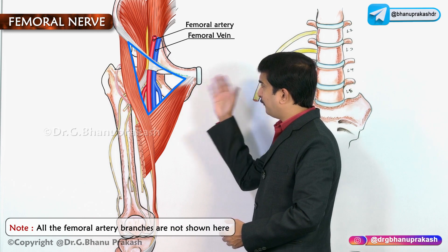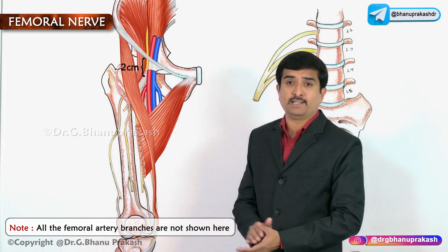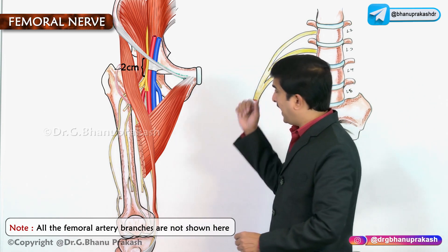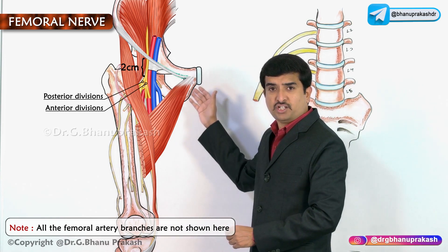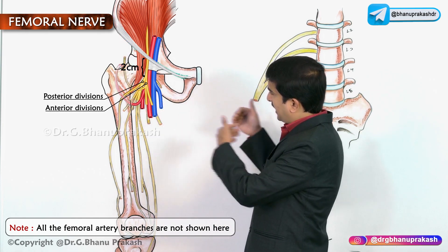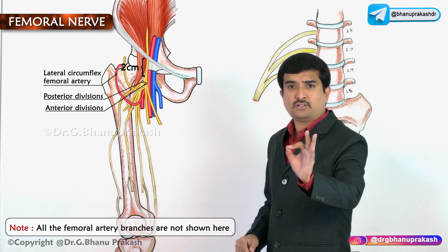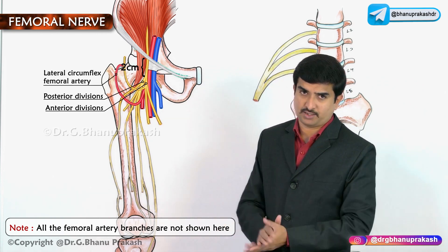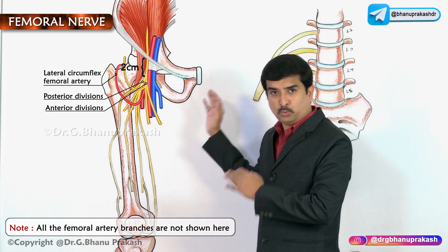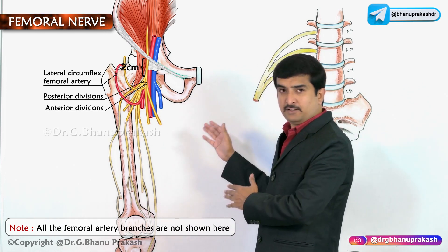About two centimeters below the inguinal ligament, within the femoral triangle, the femoral nerve splits into anterior and posterior divisions. These anterior and posterior divisions are separated by the lateral circumflex femoral artery, which is the structure that divides the femoral nerve into its two divisions.